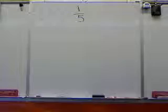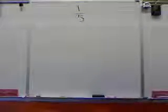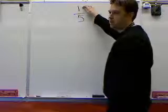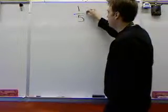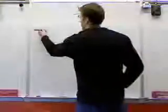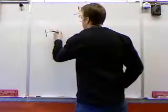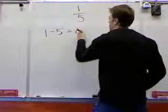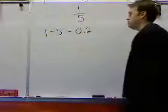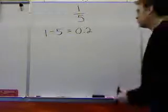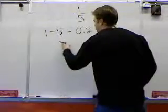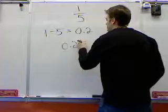For another example, let's take a look at the fraction 1/5. Obviously we know that 1 over 5 simply means 1 divided by 5. So if we take 1 divided by 5, we come up with a decimal of 0.2.